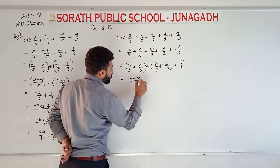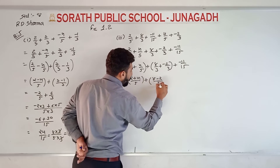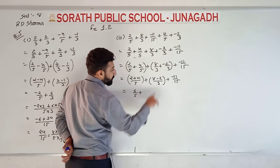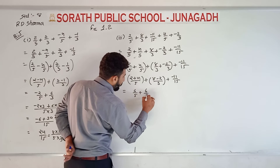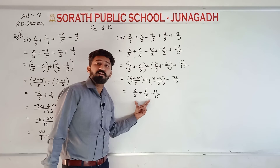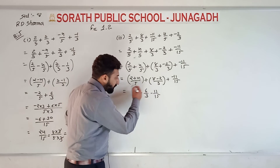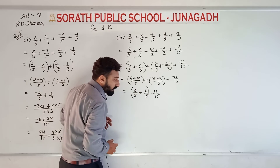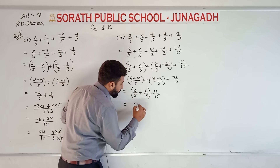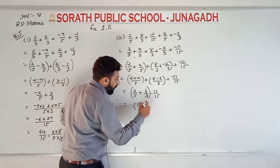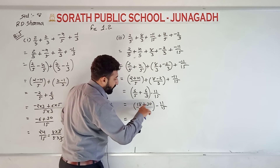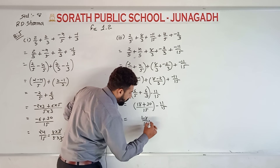2 plus 4 upon 5, plus 8 plus minus 2 upon 3, plus minus 11 upon 15. That gives 6 upon 5, plus 8 minus 2 which is 6 upon 3, plus minus 11 upon 15. We have 3 terms, so cross multiplication: 3 multiplied here — 6 threes are 18, plus 6 fives are 30, upon 5 threes are 15. Plus minus 11 upon 15. So 18 plus 30 equals 48 upon 15, minus 11 upon 15. Both denominators are same so directly: 48 minus 11 equals 37 upon 15.